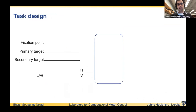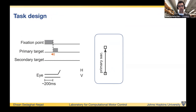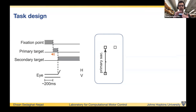Our task is a saccadic eye movement task. We present a center target and the monkey fixates for about 200 milliseconds. After fixation, we play a sound and jump the target to a new location. When we detect the onset of the primary saccade, we jump the target again to a new location. Since this second jump happens at saccade onset, it occurs while the eye is in flight, and as you know, the eye is essentially blind during a saccade, so the monkey will not see the second jump.